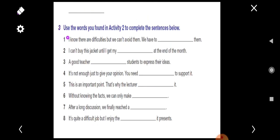Now let's move. Use the words you find in activity number two to complete the sentences below. Also, you'll complete them by yourself first, then you will see the video and the answers. Now let's work together. Number one. I know there are difficulties, but we cannot avoid them. We need to face them. Number two. I can't buy this jacket until I get my wage at the end of the month.